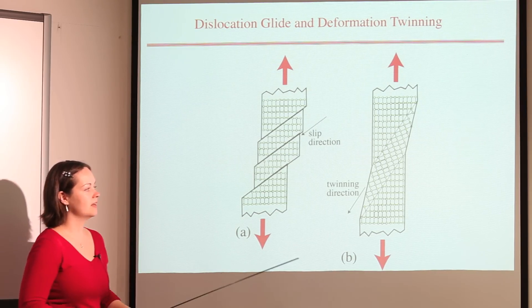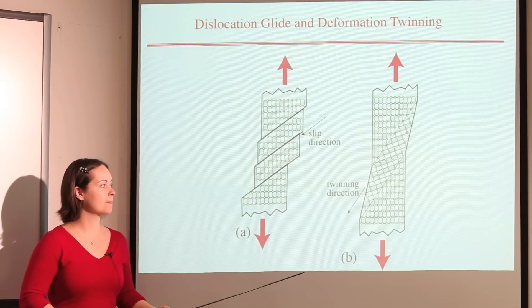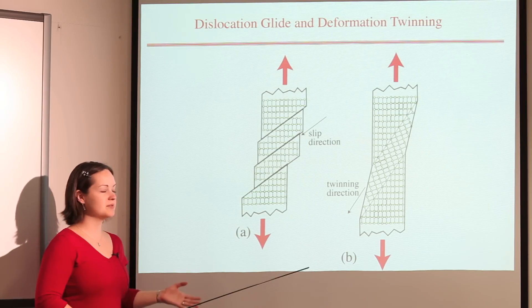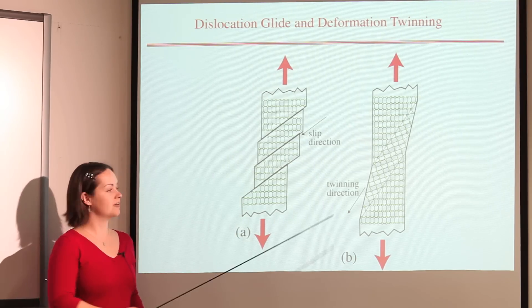Deformation twinning, on the other hand, occurs by the cooperative shear movement of many atoms. All of the atoms move at the same time in the same direction, and that direction is the twinning direction.